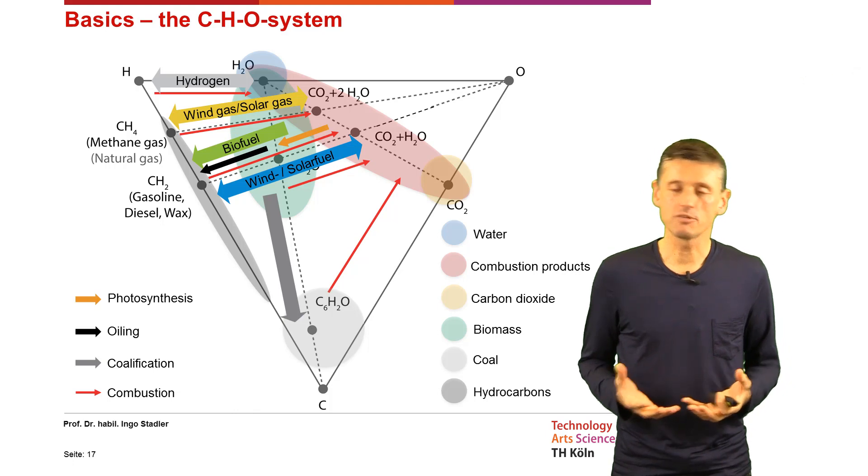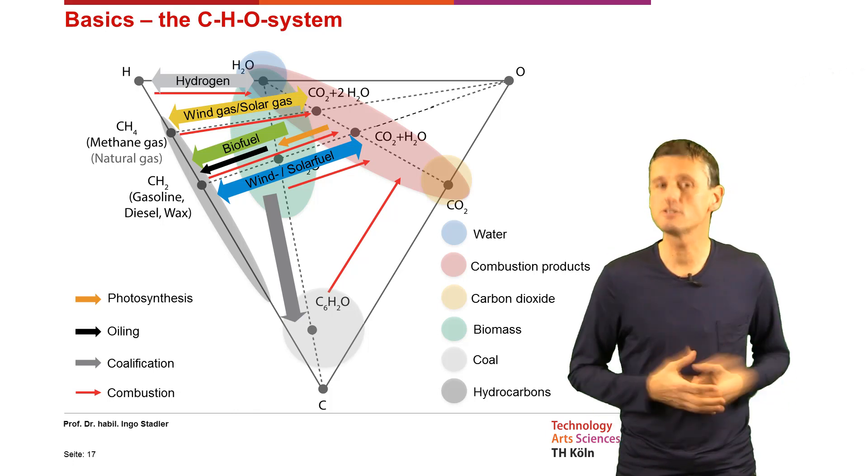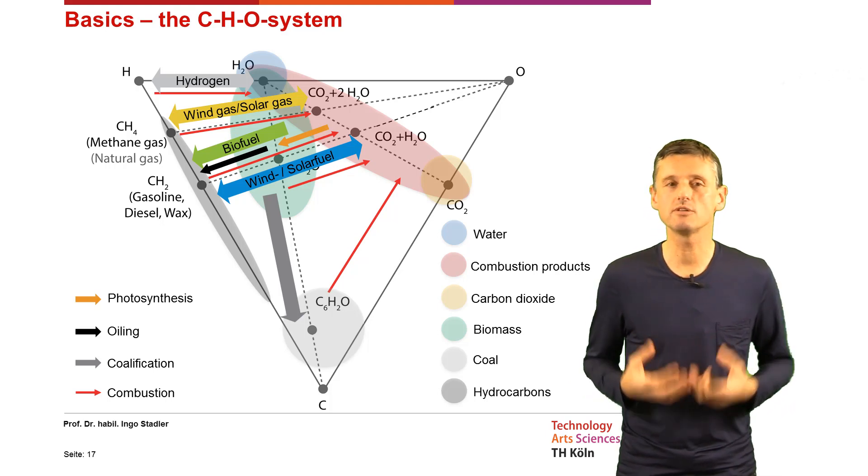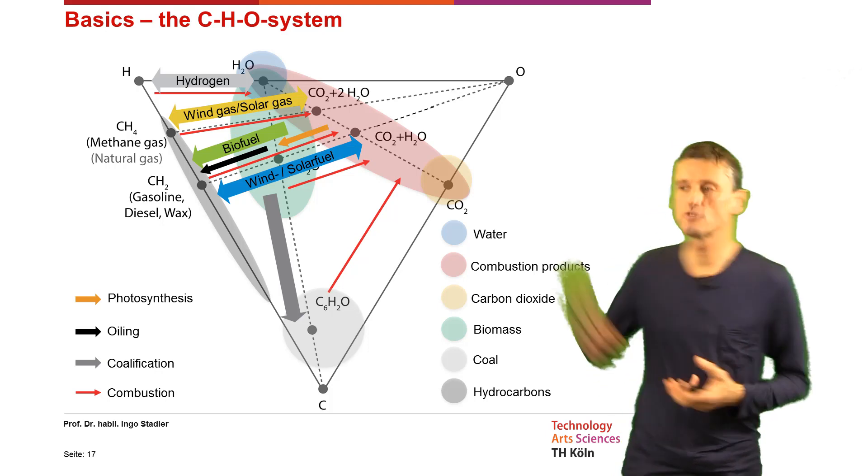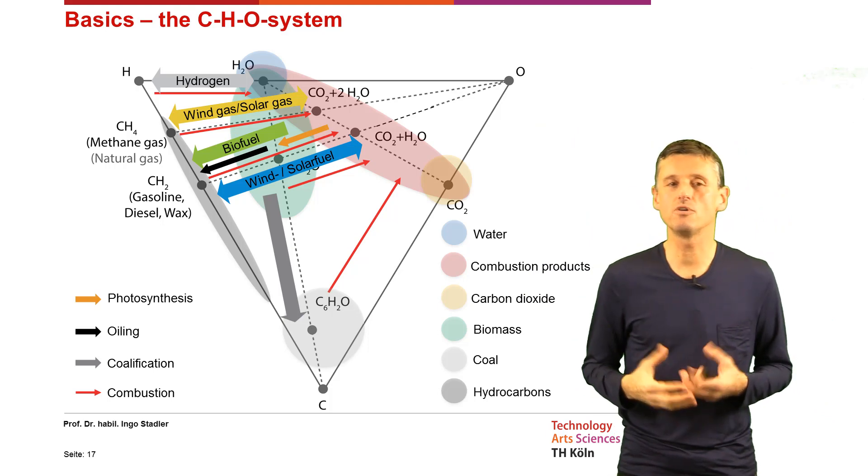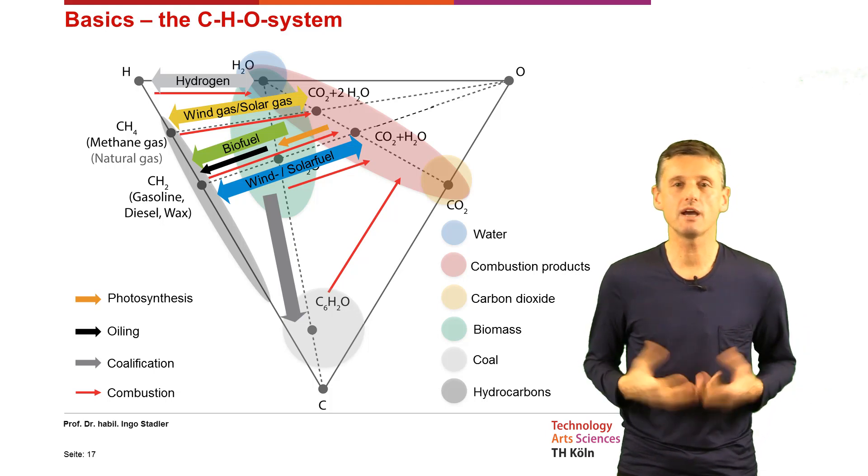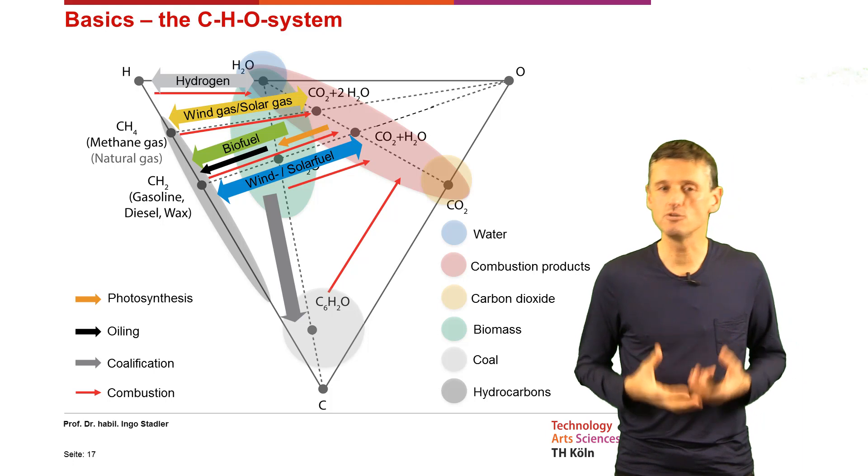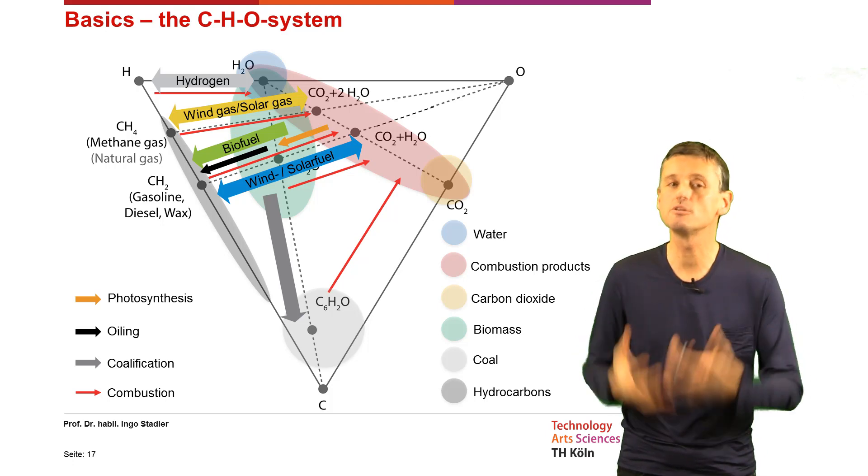But the same what nature has done over centuries, over thousands, millions of years, nowadays we know how we also can do that on a technical basis. Maybe the most famous one is what we see on the complete other upper side. That is when we have the water electrolysis and then we produce the hydrogen. Then we have a high energy density energy carrier that we again can use to produce, for example, electricity or heat or use in the mobility sector.